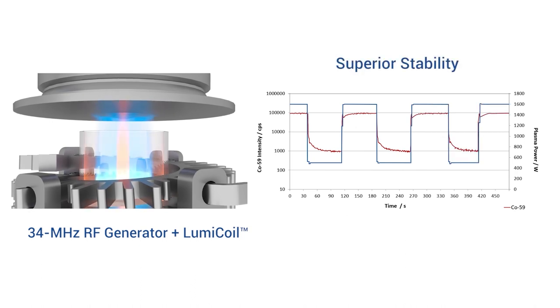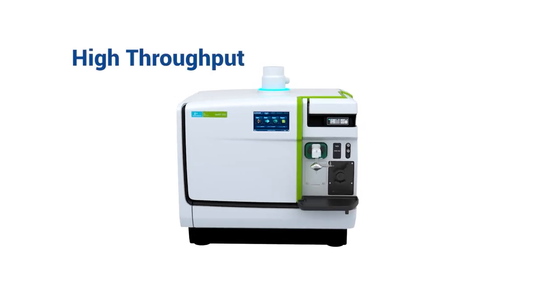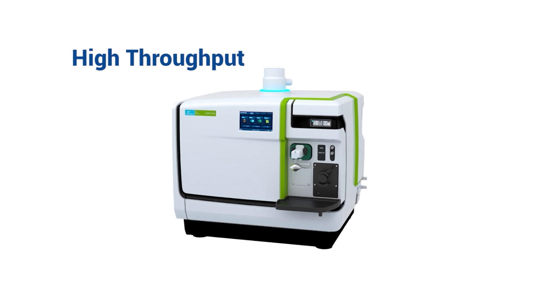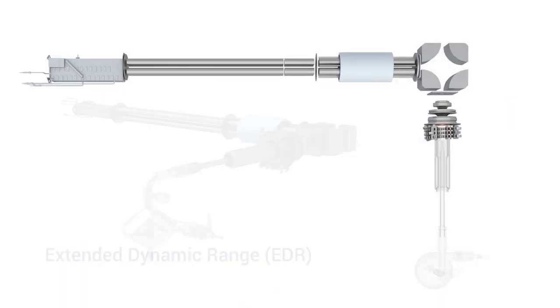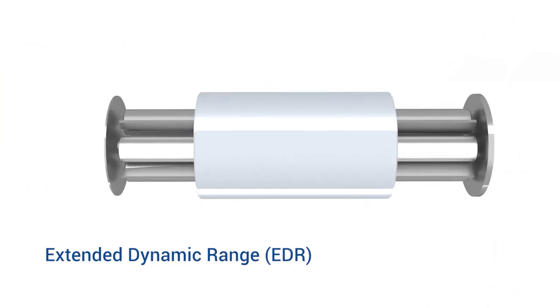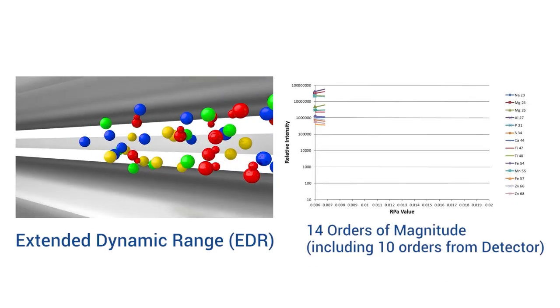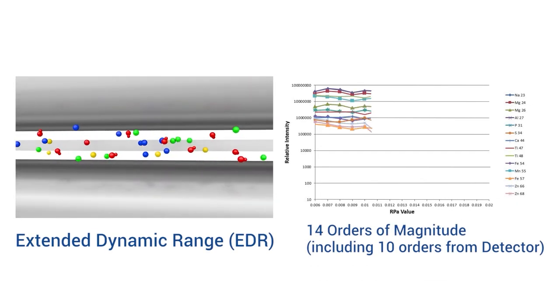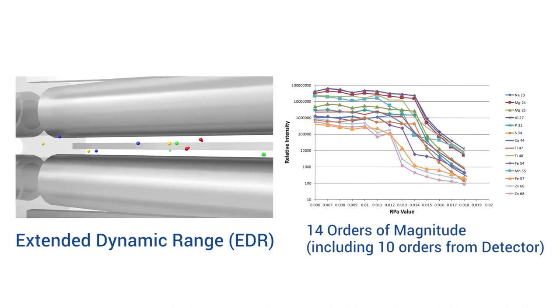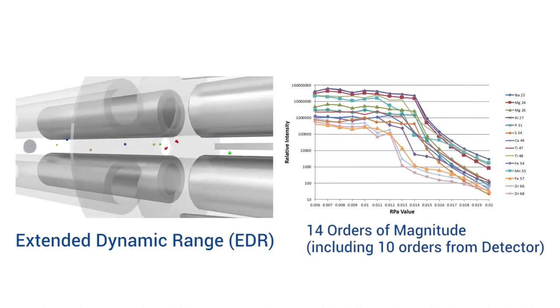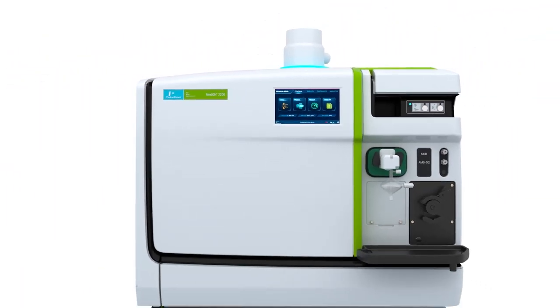The NexION 2200 ICP-MS effectively addresses the fast turnaround demands of today's testing labs. It boasts extended dynamic range, a capability unique to quadrupole cells that increases the linear dynamic range up to 14 orders of magnitude, allowing the analysis of high and low concentration analytes in a single run, so fewer reruns.